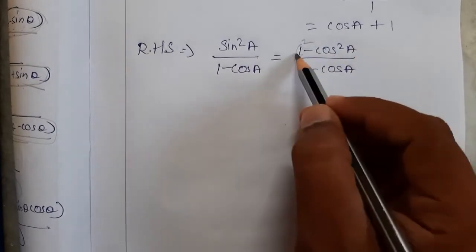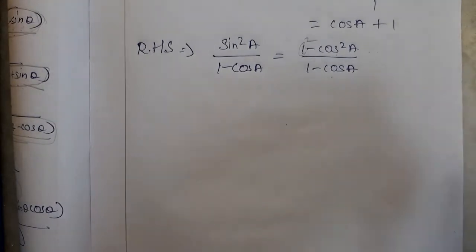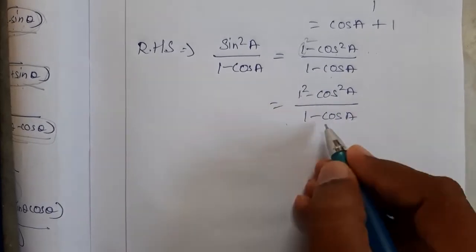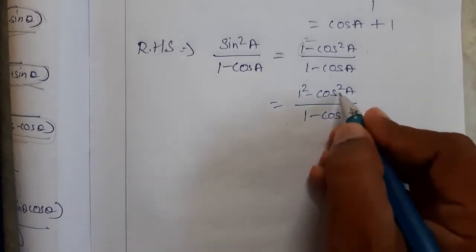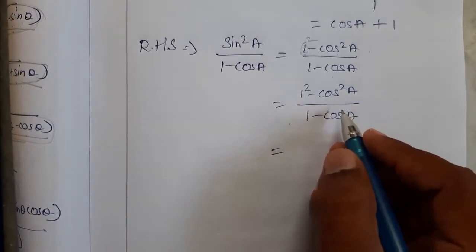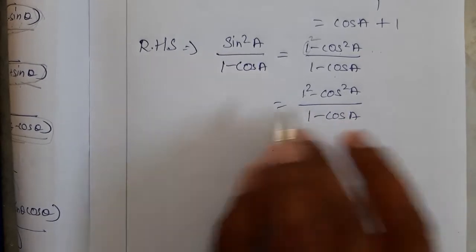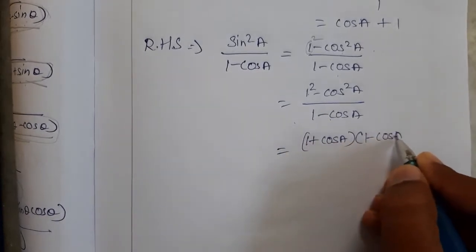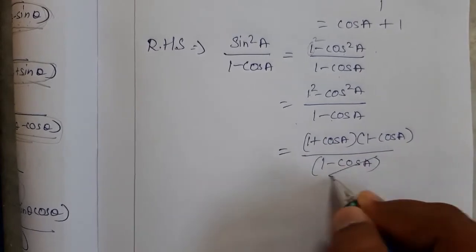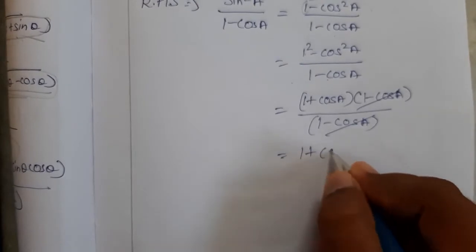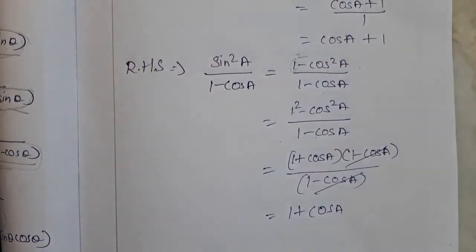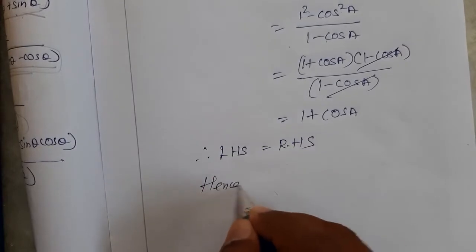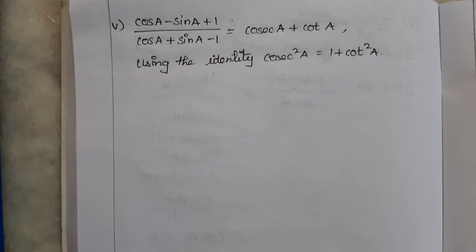Applying the a squared minus b squared formula, we get 1 squared minus cos squared A equals 1 plus cos A into 1 minus cos A, divided by 1 minus cos A. The 1 minus cos A terms cancel, and we get 1 plus cos A, which is the same as what we got in LHS. Therefore LHS equals RHS, hence proved.